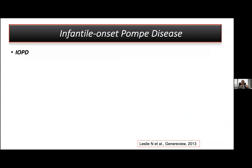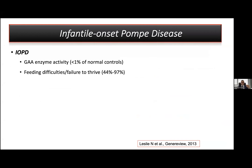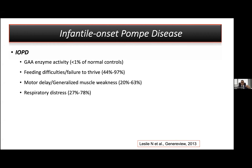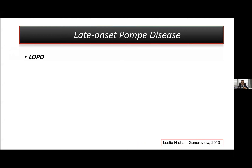In infantile onset Pompe disease, the phenotype is so severe with huge muscle weakness, residual enzyme activity less than 1%, feeding difficulties, failure to thrive, motor delay, and generalized muscle weakness. The main problem is respiratory difficulties in these babies, but the fatal problem is cardiac: the patient has cardiomegaly or cardiomyopathy.